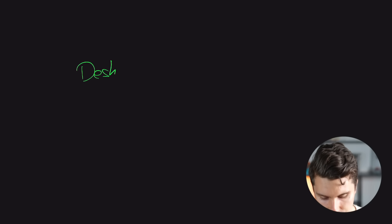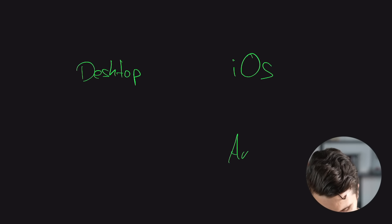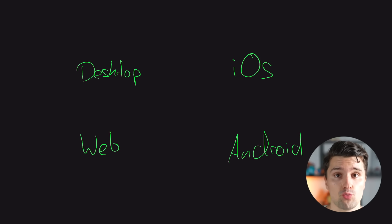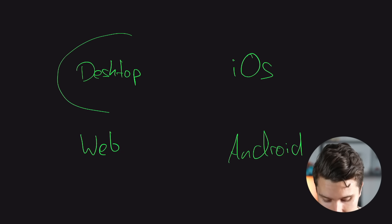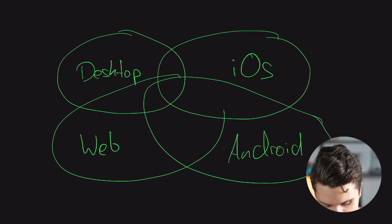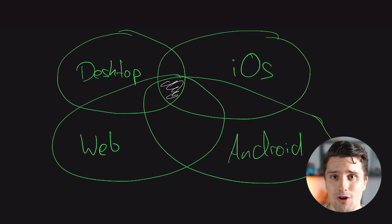If we have desktop, iOS, Android, and web as platforms and we build the same application to run on all of them, there will always be a common part between those platforms. In reality, the common part is much bigger than I can illustrate here. So why isn't there a way that lets us share this common logic — the logic that is the same between all platforms — and only write the differing logic multiple times? There is! It's called Kotlin Multiplatform.